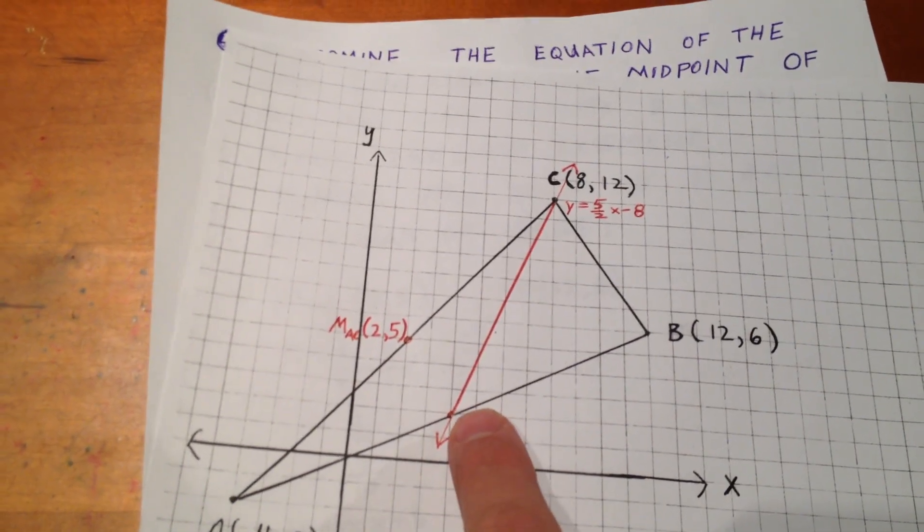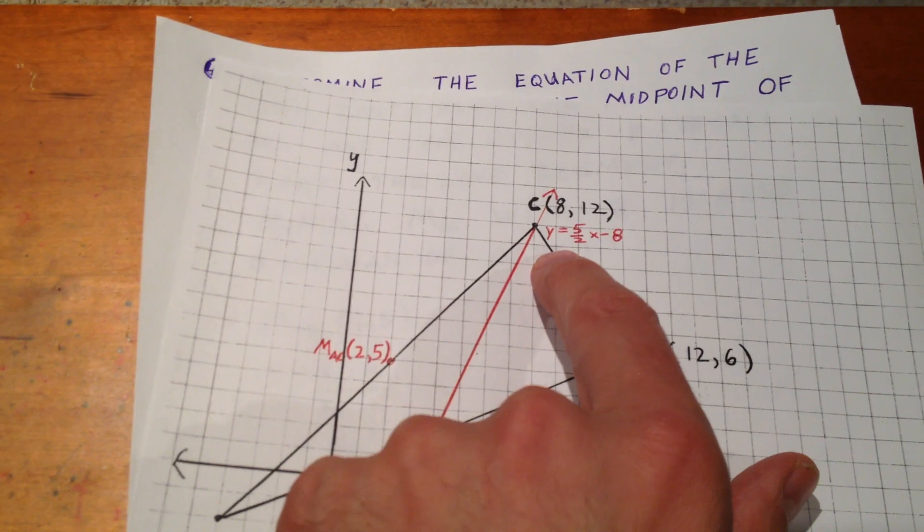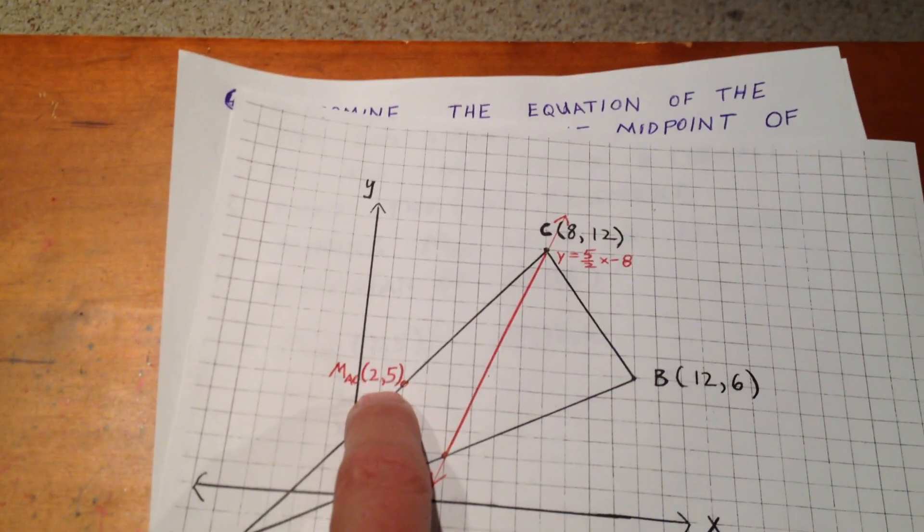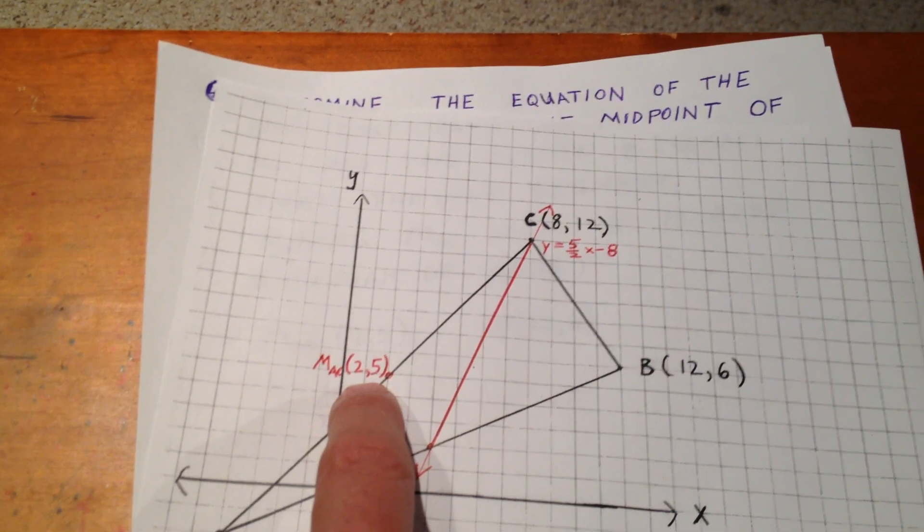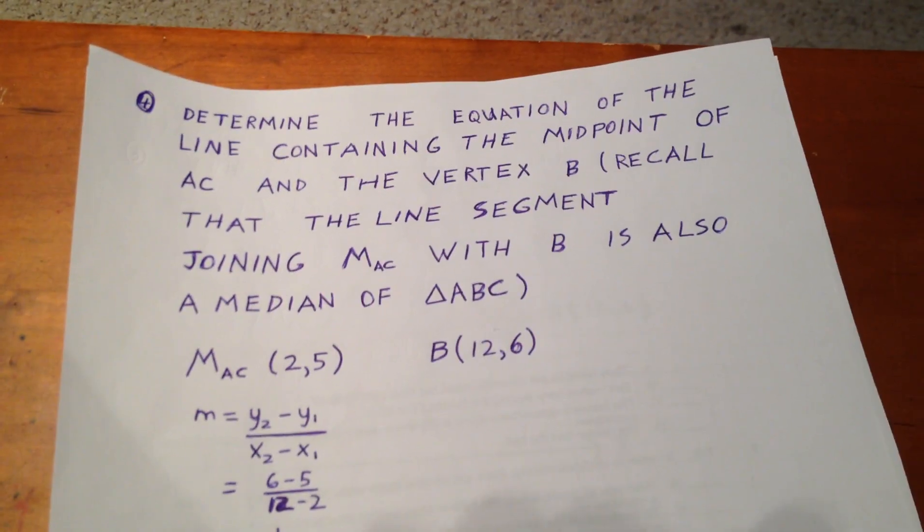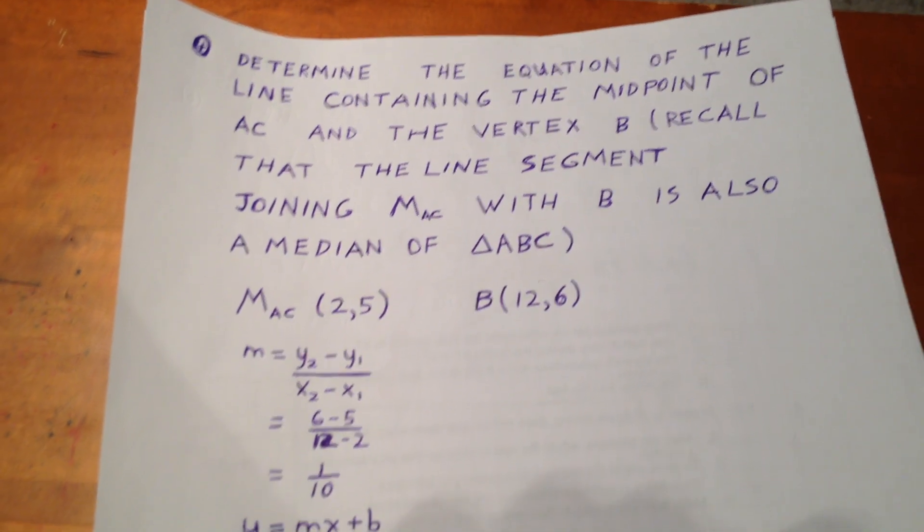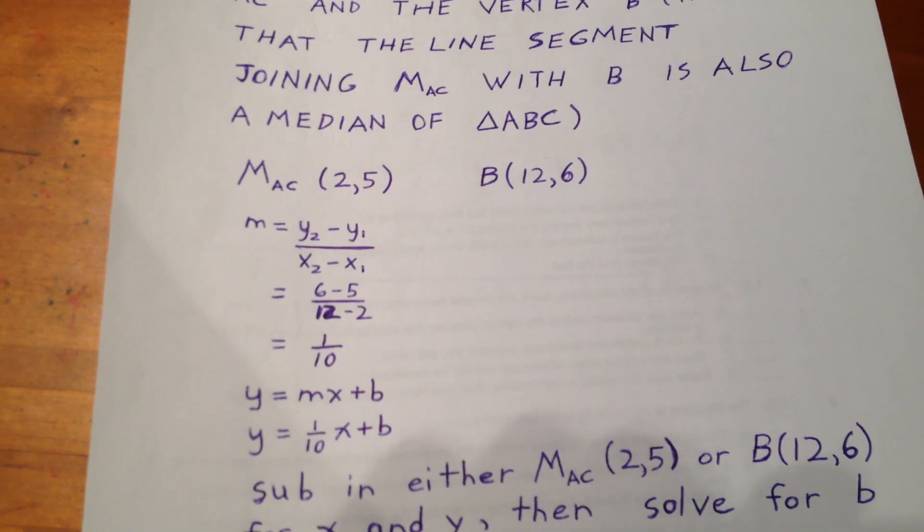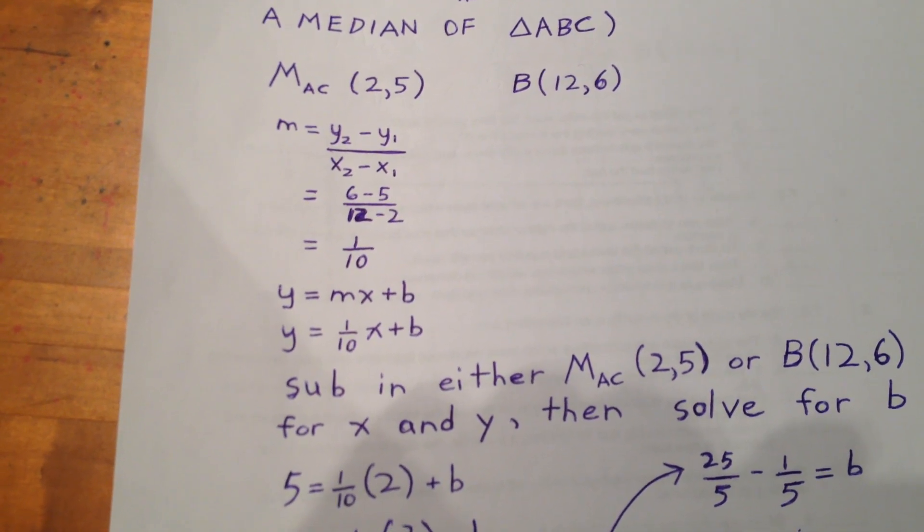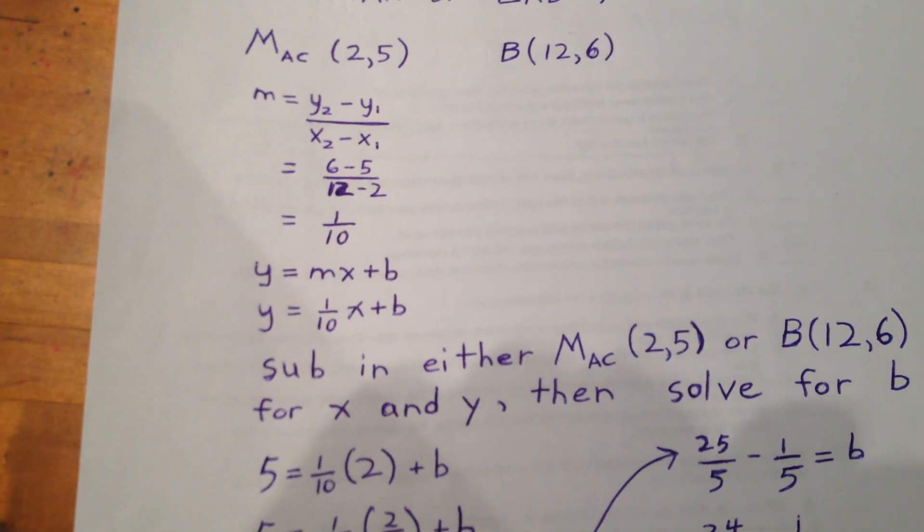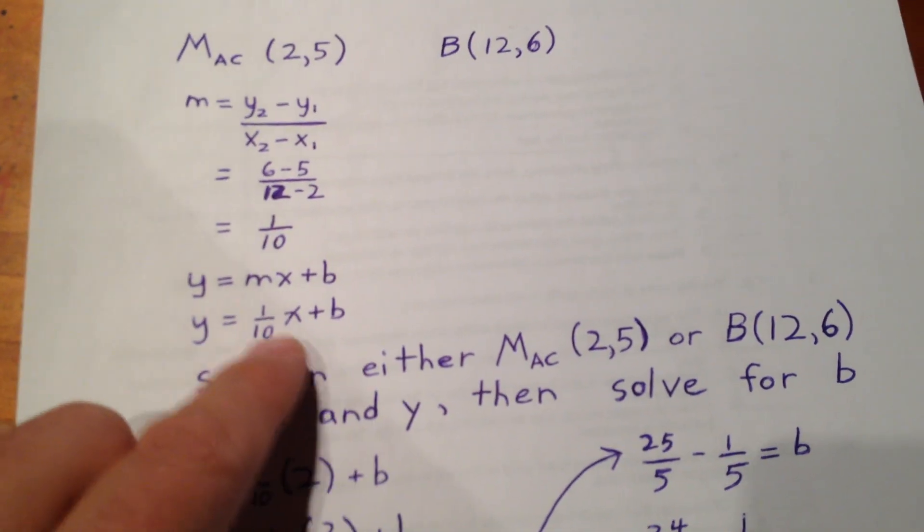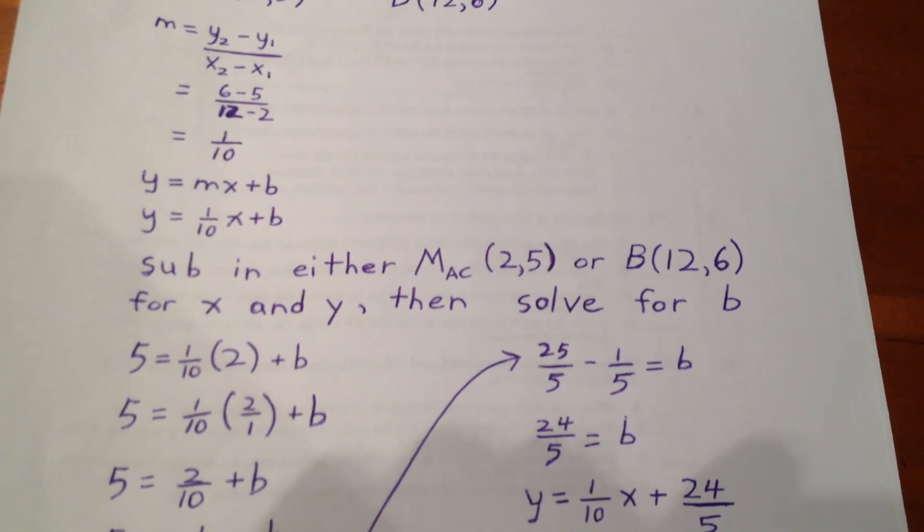So, again, going back to our first diagram, we can see our first median is y equals 5 halves x minus 8. And we see that our second midpoint is at 2, 5. And we're going to try and determine the equation of the line that extends from 2, 5 to 12, 6. So, doing that, we remember that that line segment is called a median. The equation of the line from 2, 5 to 12, 6 is determined first by determining the slope. The slope using y2 minus y1 over x2 minus x1 is 1, 10th. We then are in a position to plug in 1, 10th for the slope, which we've done right here.